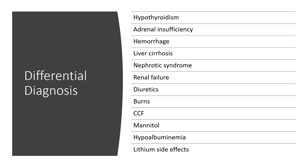Is this person on diuretics — non-potassium-sparing like furosemide, high-ceiling diuretics, potassium-sparing, and so on? Could this be congestive cardiac failure? Could this be as a result of mannitol osmotic diuretics, or even hypoalbuminemia? You can easily check that just by looking at the albumin level.